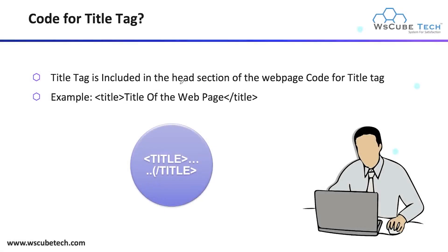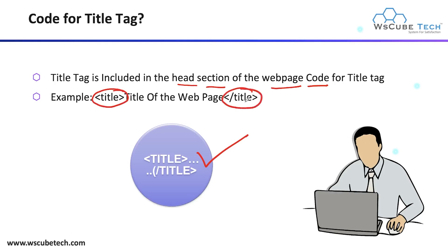The title tag is included in the head section of your web page code. The code is denoted like this — here we have the opening HTML title tag and the closing title tag. Let me explain how, for any particular website, you can figure out where your title tag is and what it contains.